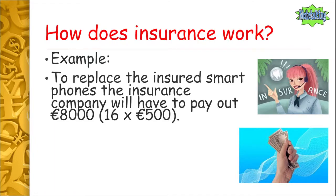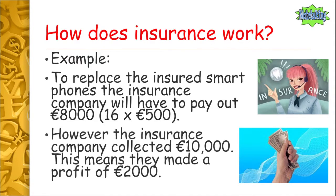To replace the 16 damaged smartphones, the insurance company has to pay out €8,000 — that's 16 multiplied by €500. However, the insurance company collected €10,000 in fees. Taking €8,000 away from €10,000 means the insurance company has made a profit of €2,000.